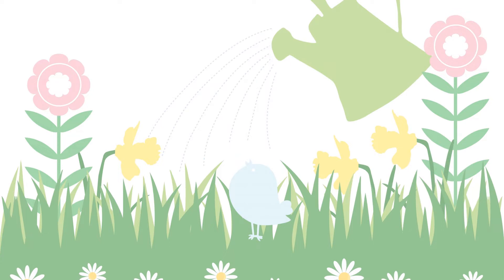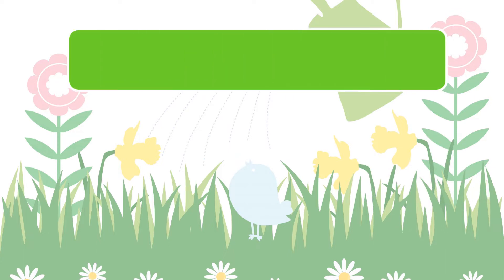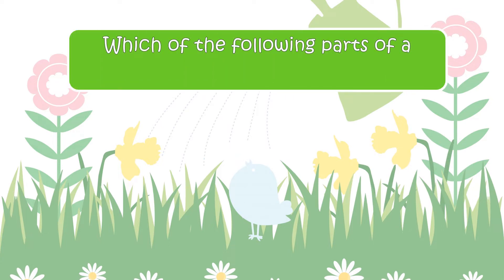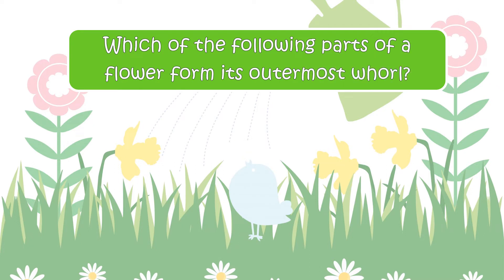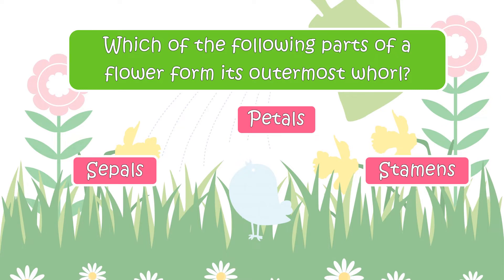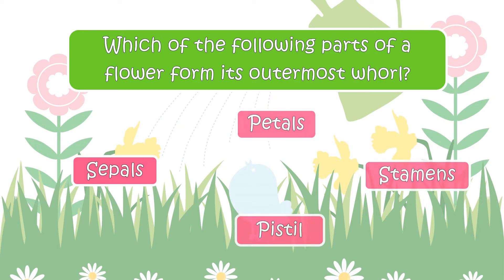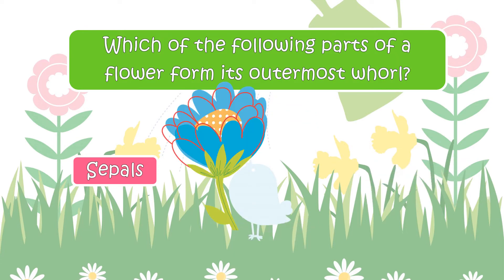Here is the next question. Which of the following parts of a flower form its outermost whorl? Your options are Sepals, Petals, Stamens, or Pistil. The correct answer is Petals.